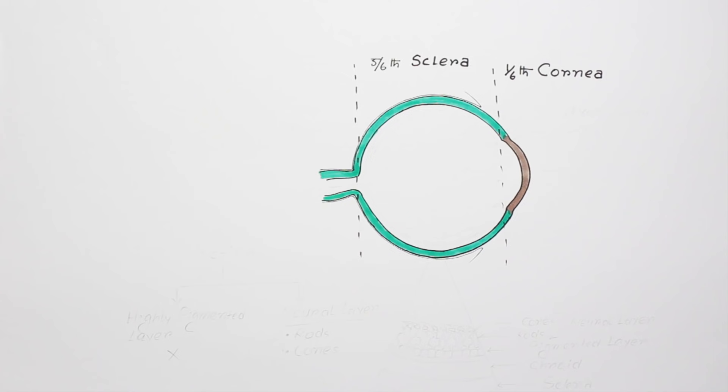So the outermost layer mostly consists of two parts: sclera and cornea, which protect the inner layer and let light come into the eyeball.